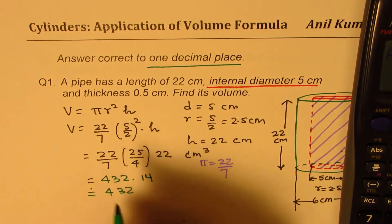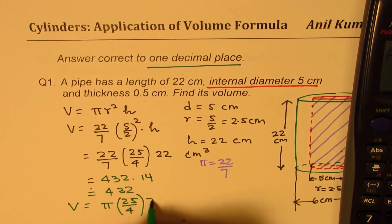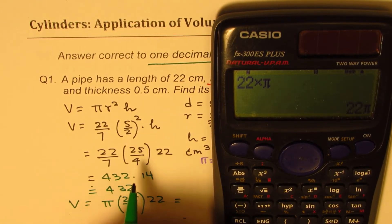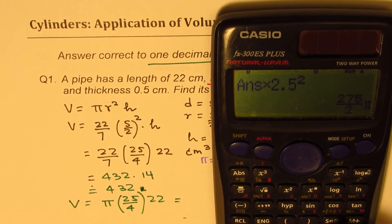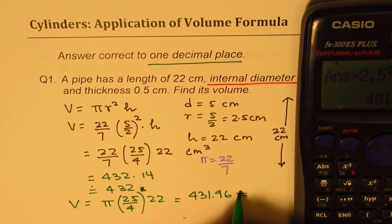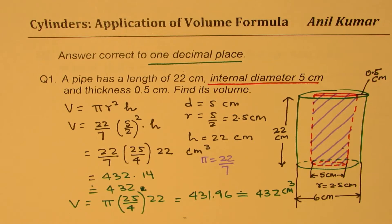You could also use the value of pi from the calculator. In that case, it will be 2.5 squared times 22 times pi. We multiply 22 by pi, then multiply by 2.5 squared to get our answer, which is 431.96, which can also be approximated as 432 centimeter cubed. In any case, it is 432 centimeter cubes.